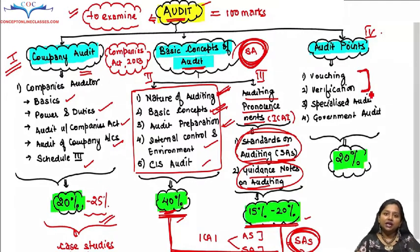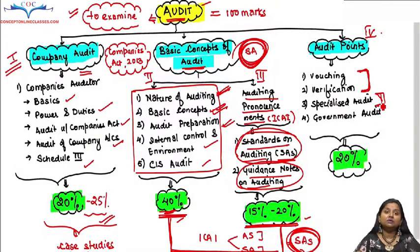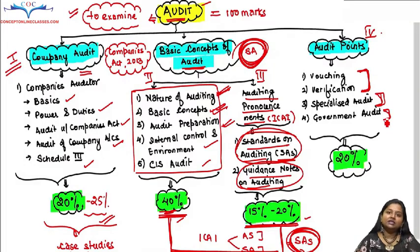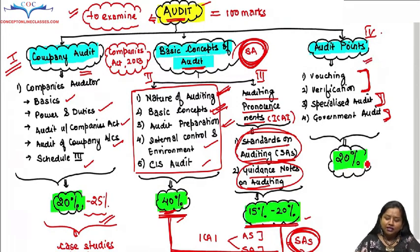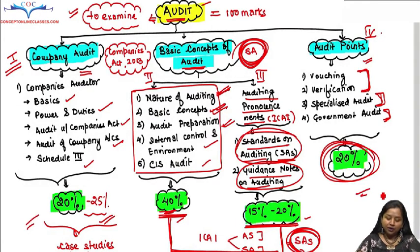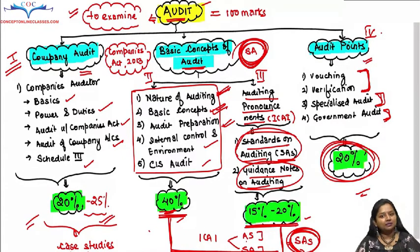In Audit Pointings, the first sub-part is Vouching and Verification – how to verify expenses and balance sheet items. The second part is Specialized Audit, where we look at organizations of special nature like hospitals, cinema theatres, colleges, schools, etc. – how their audit is conducted. The third element is Government Audit – how government books and accounts are audited. Audit Pointings carries approximately 20 marks. On average: 20 marks Company Audit, 20 marks Audit Pointings, and 40 to 60 marks Standards on Auditing, which will take the most time.